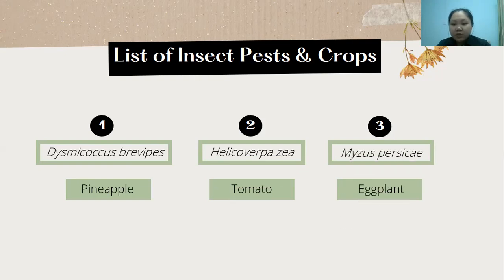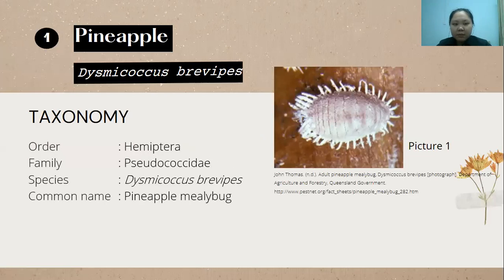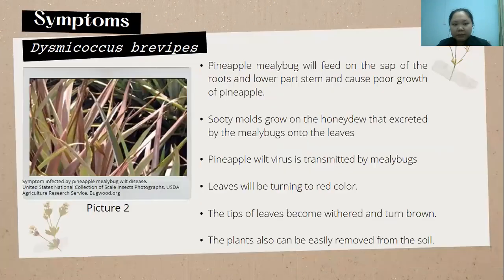For the first crop, pineapple, the taxonomy of Dysmicoccus brevipes: its order is Hemiptera, the family is Pseudococcidae, and its common name is the pineapple mealybug. Picture one shows the features of the pineapple mealybug.